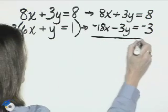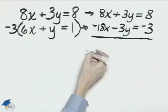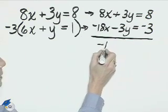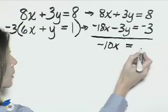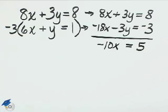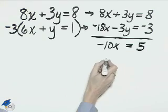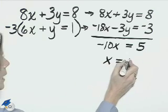Then adding these two equations together, 8x minus 18x is negative 10x, 3y minus 3y is 0, and 8 minus 3 is 5. Then divide both sides by negative 10, and x will be negative 1 half.